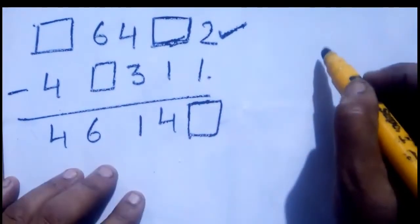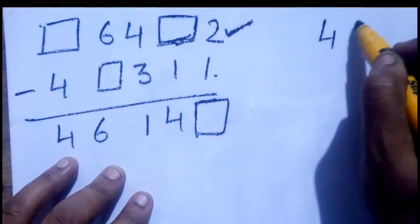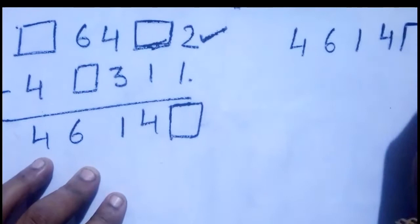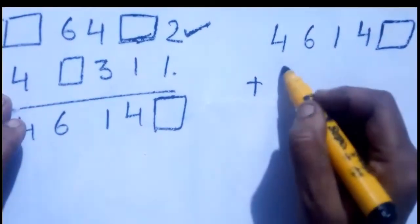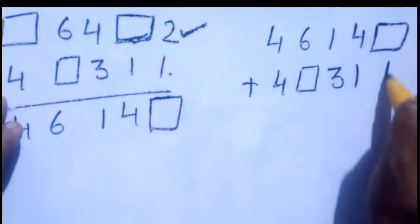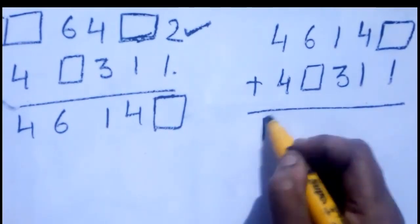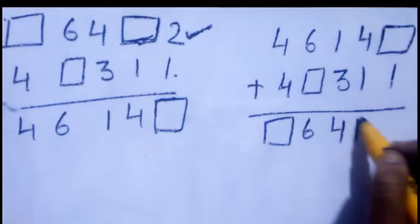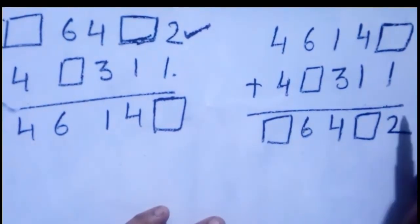So how we have to do it: first you write the answer, which is 4 6 1 4 [box], then you add the second number, 4 [box] 3 1 1. When you add these two, you should get the top number: [box] 6 4 [box] 2.